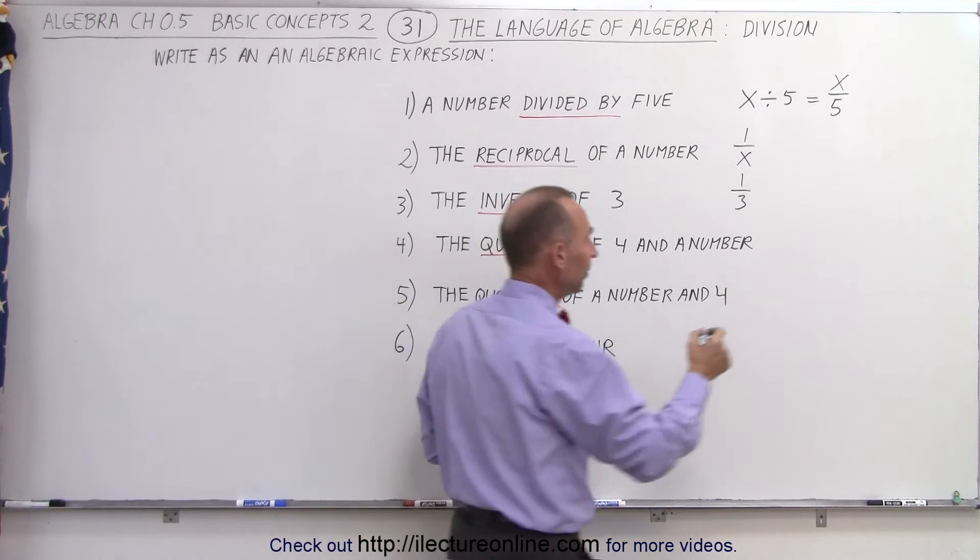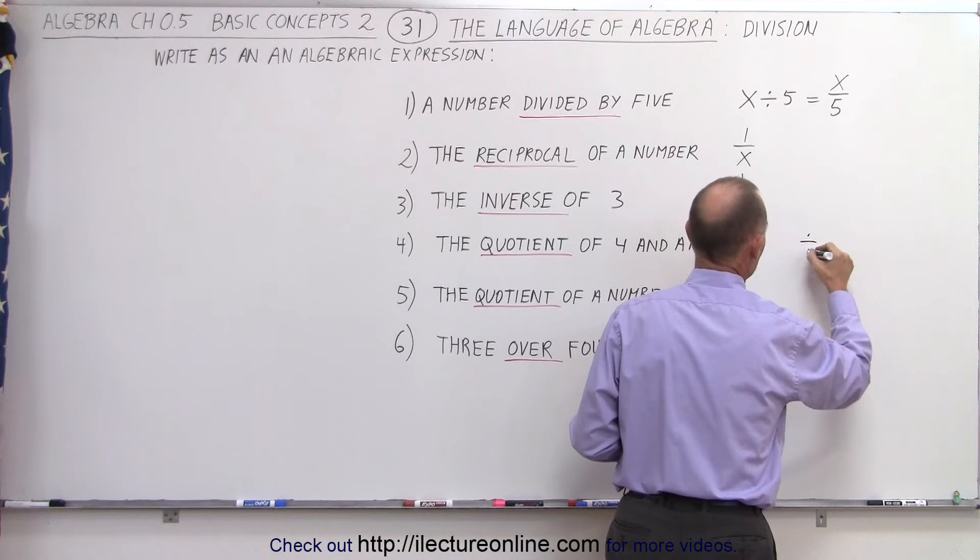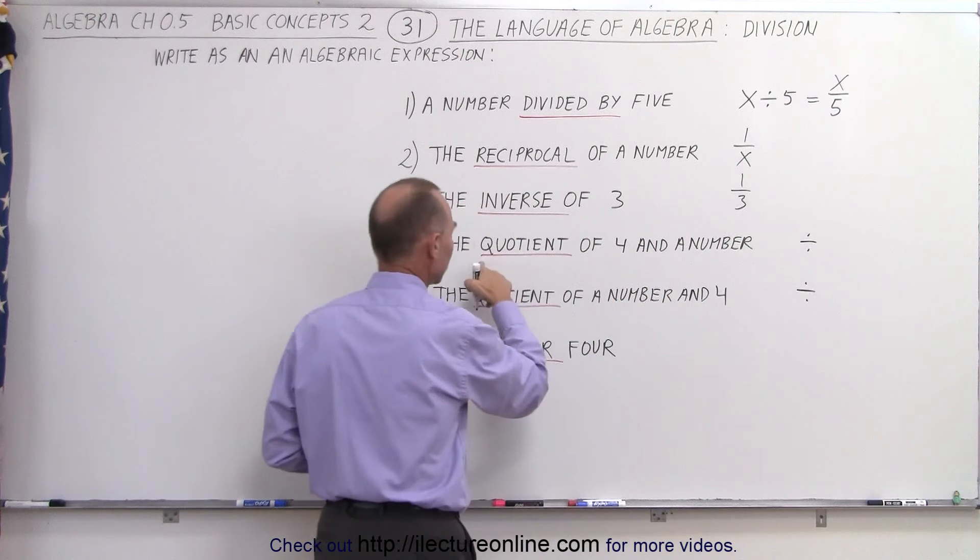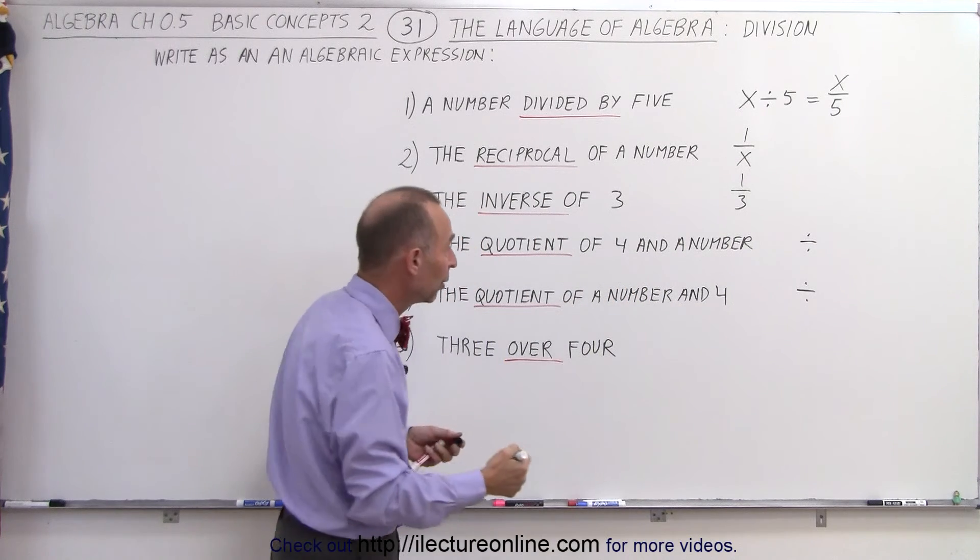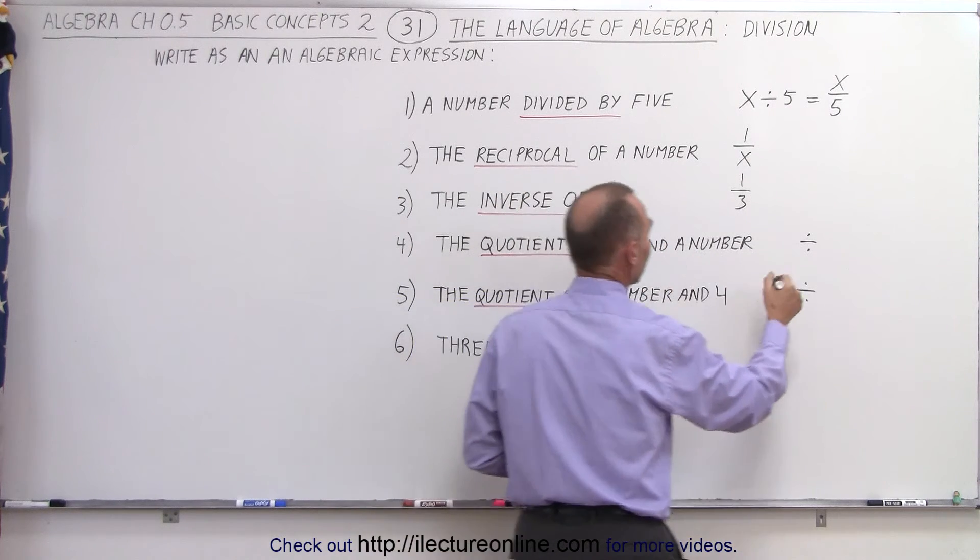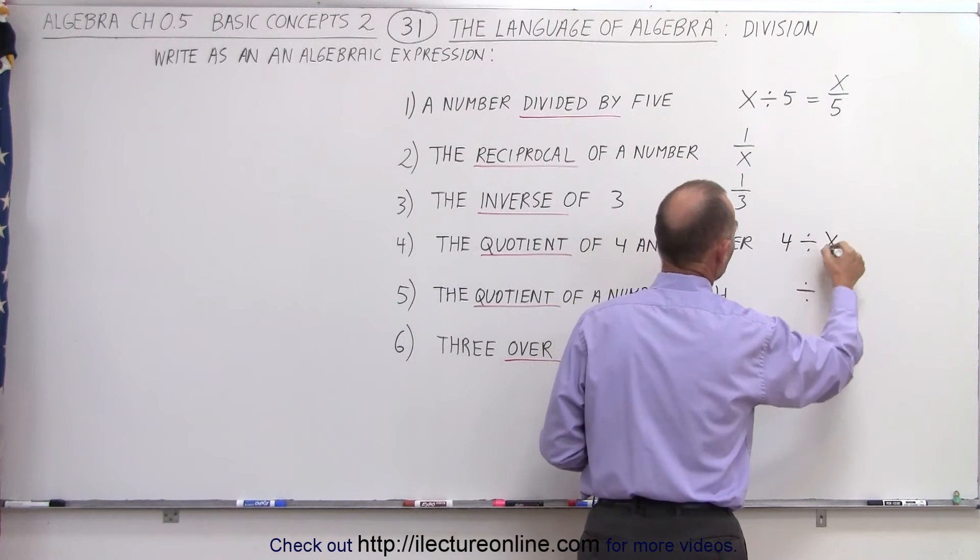We write a division symbol like this, and then we see which number appears first. So we read the word quotient, which means there's going to be a division. We see 4 and a number, 4 goes first, the number goes last, so it would be 4 divided by x.